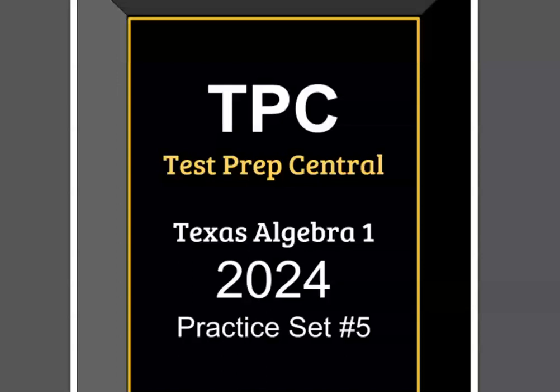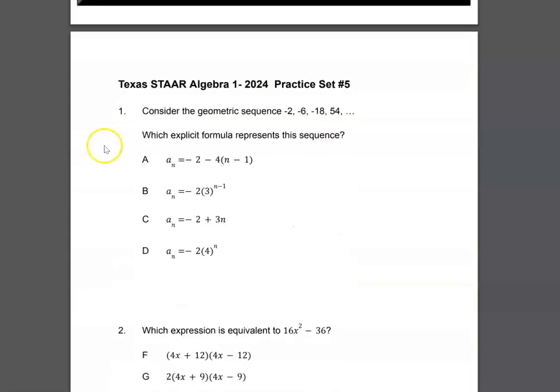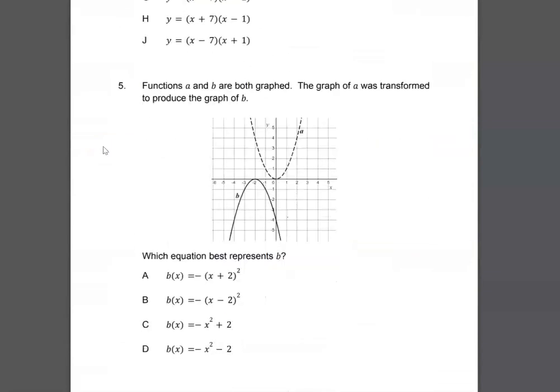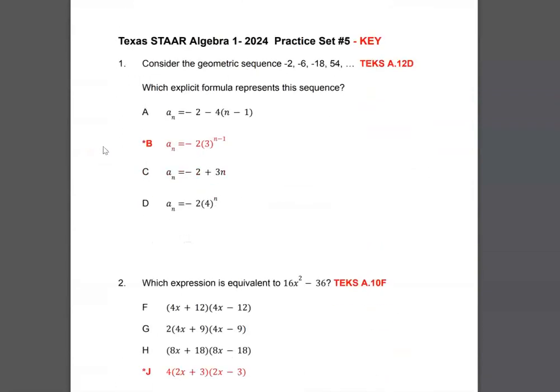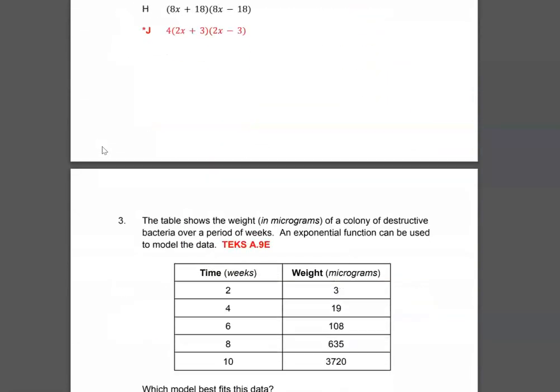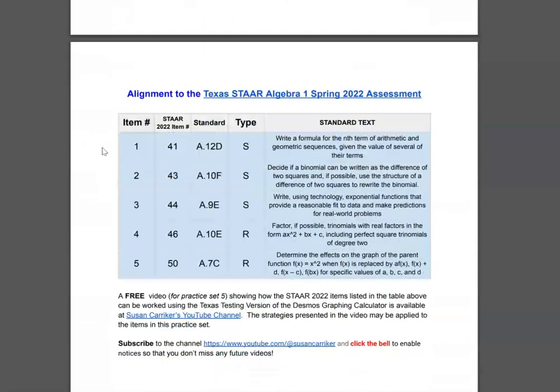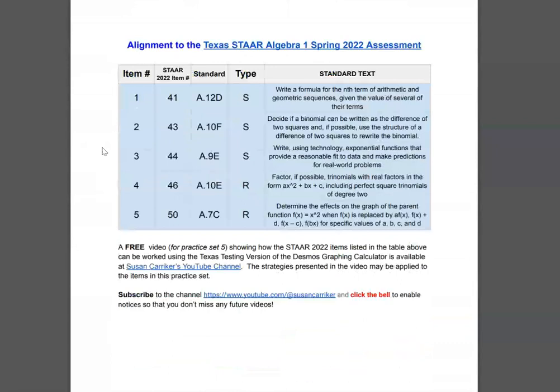Now, once you've downloaded your copy of your practice set, it's going to look something like this. Let's go ahead and scroll through the practice set, and you'll see five items, and then there's an answer key for those five items with the TEKS alignment. These are the Texas standards. And then at the very end is a table that we're going to use in this assignment, in this activity.